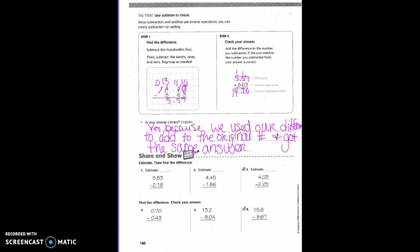These problems are going to be just like yesterday's only they are subtraction. Each one is worth four points if they include the estimate, because you have to show your work on estimation and on the original problem, and you get a point for the answer. So five and 83 hundredths — what are we going to round that to? 6. Minus 2 and 18 hundredths — we're going to estimate 2. So 6 minus 2 equals 4.